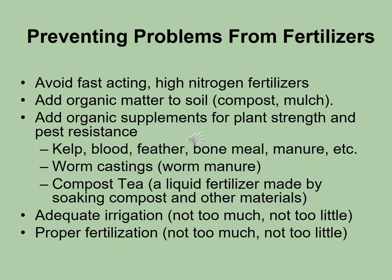For sustainable soil care and landscaping, some things to do: avoid fast-acting high nitrogen fertilizers; use a lot of organic matter in your soil — add as much as you can, compost and mulch; add organic supplements as much as you can; and provide plenty of irrigation but not too much, not too little, just the right amount — and proper fertilization. Not too much or too little. It's different for every garden, system, and plant.